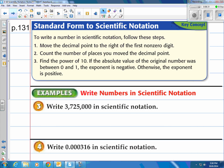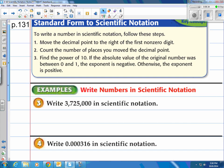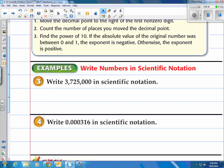So let me show you through the example number three here. Write 3,725,000 in scientific notation. All right, step one.